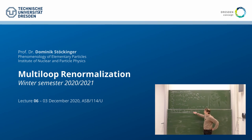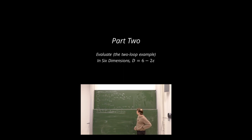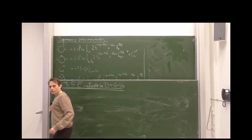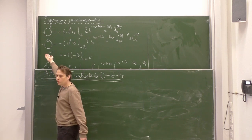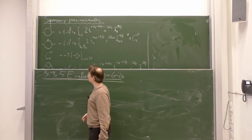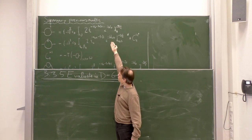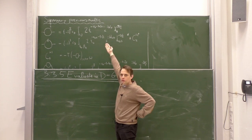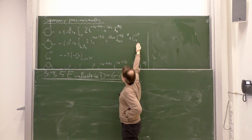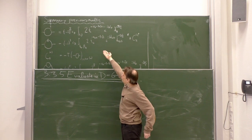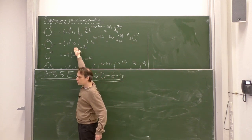Next let us evaluate the same structure in six dimensions, d equals 6 minus 2 epsilon. Let us do it in exactly the same order as before, starting with one loop, then one loop counterterm insertion, and then two loop. As announced before, the difference will be that the one loop diagram will be momentum independent, even its divergent part, and therefore we need to deal a lot with inserting a momentum dependent counterterm into this one loop counterterm Feynman diagram. So this will be the most difficult part.